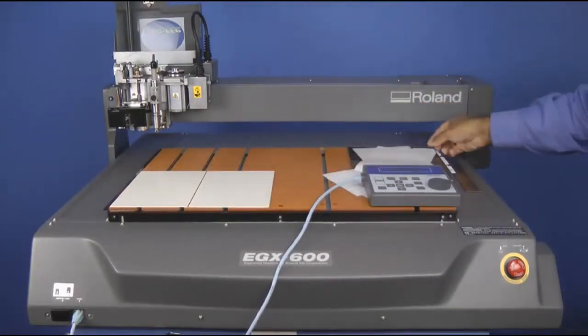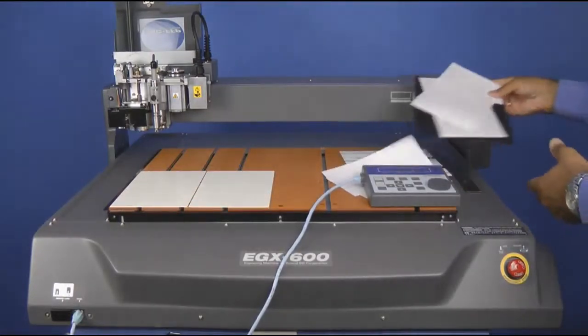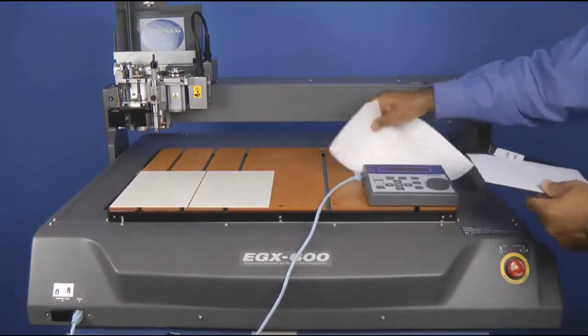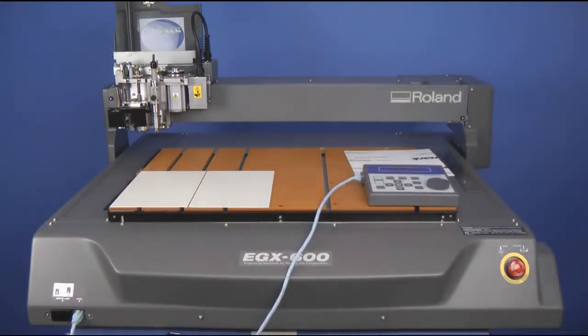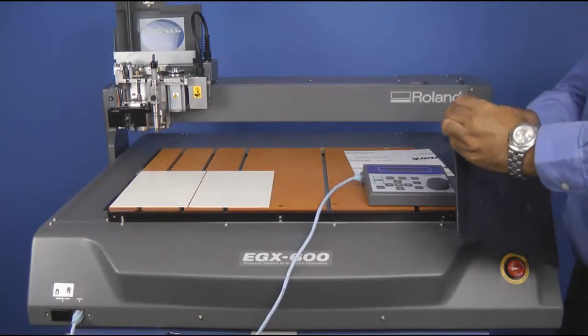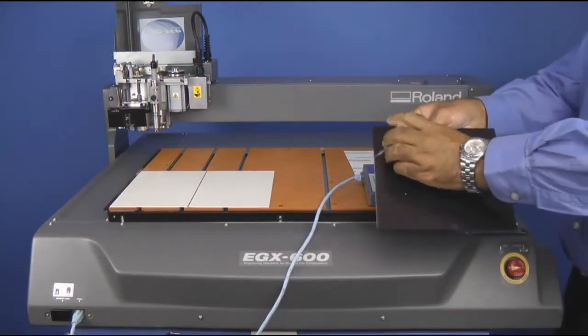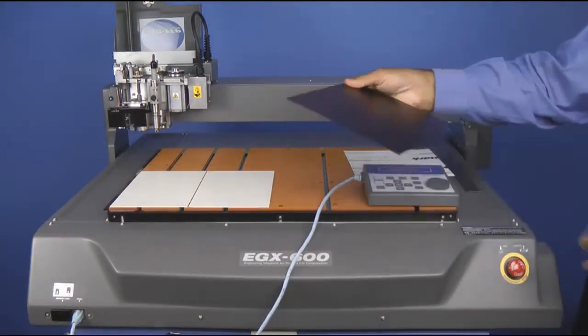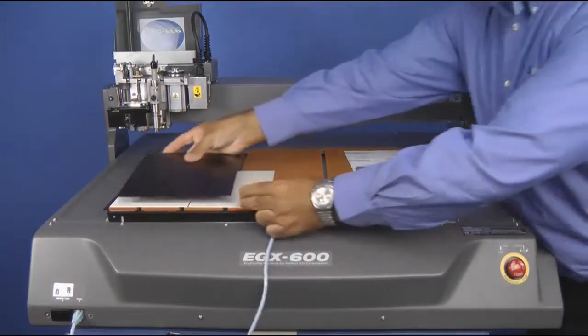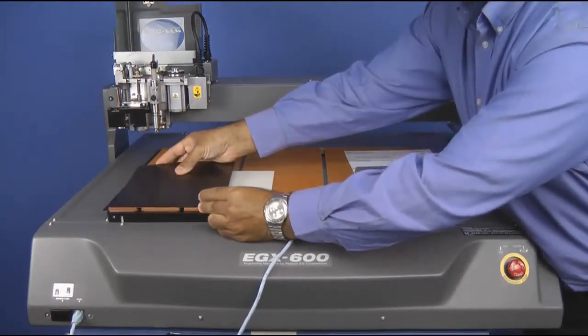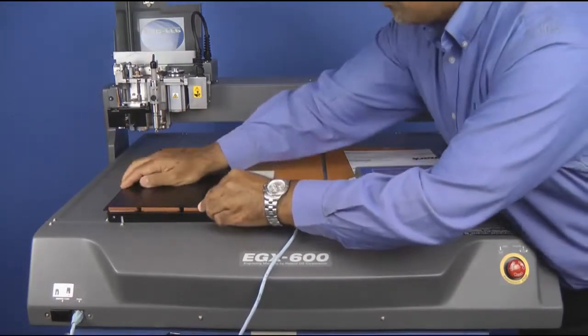Once we have the AS10s in place, we'll go ahead and take our ADA compliant substrate. We'll go ahead and peel off the plastic protective layer, and we'll mount that. You want to make sure you square it up and mount that on top of the AS10.